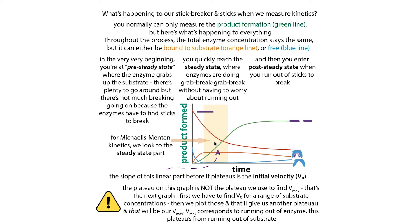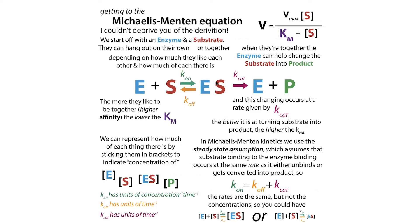In order to get those initial velocities, we do a bunch of experiments — we take an enzyme, change the substrate concentration, and measure the formation of the product. A key thing is that we need to measure the velocity when we're in the steady state. In terms of mathematically, the steady state is telling us that the concentration of the enzyme-substrate complex is going to stay constant — the rate at which it's formed is the same as the rate at which it's unformed, either by releasing the substrate or by converting it into product.